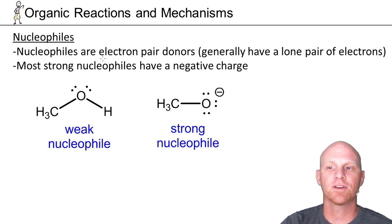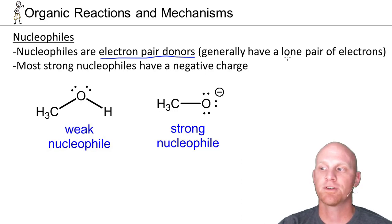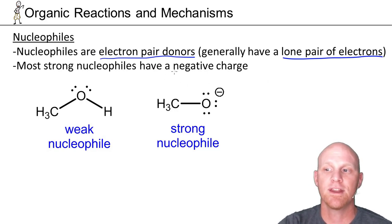We've got some terminology to know. A nucleophile is an electron pair donor, somewhat synonymous with a Lewis base. To act as electron pair donors, you've got to have a non-bonding pair of electrons, a lone pair. Generally, if you have a negative charge, you're going to be stronger than if you're neutral.